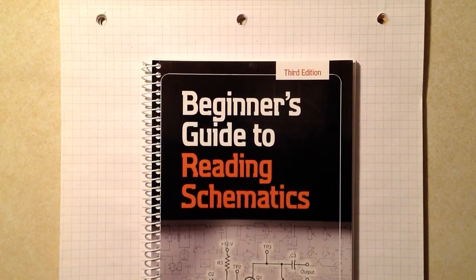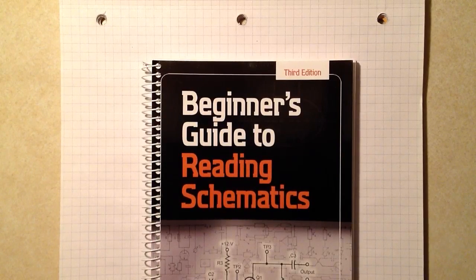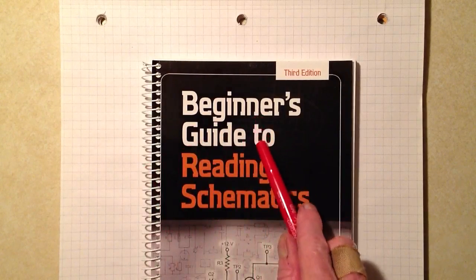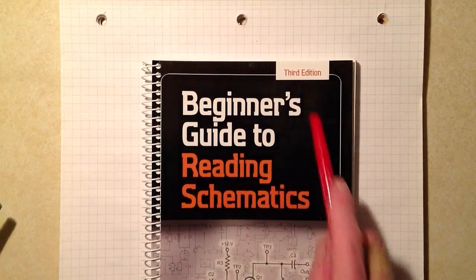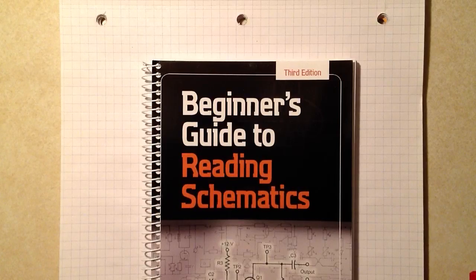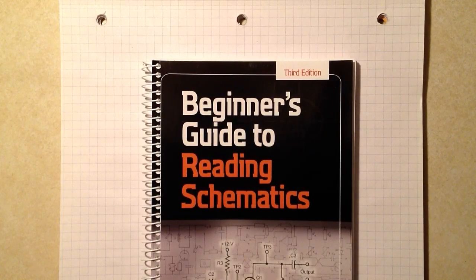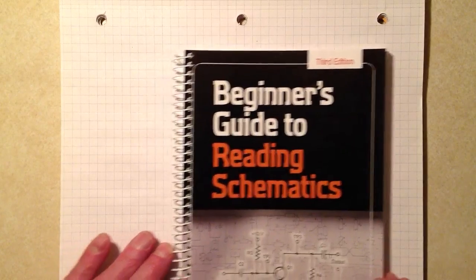Continuing our little tutorial series of videos regarding the book, Beginner's Guide to Reading Schematics, 3rd edition, published in October 2013 by McGraw Hill. You are looking at the spiral bound edition.